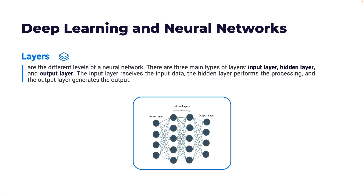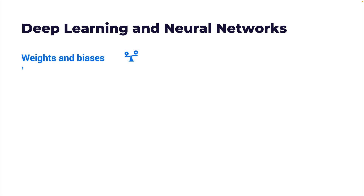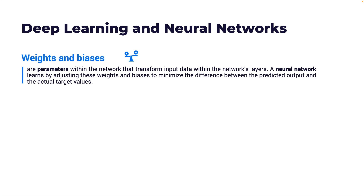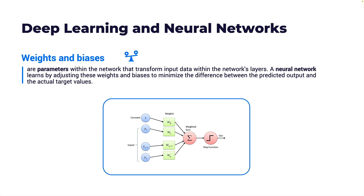Layers are the different levels of a neural network. There are three main types: an input layer, a hidden layer, and an output layer. The input layer receives the input data, the hidden layer performs the processing, and the output layer generates the final output. Weights and biases are parameters within the network that transform input data within the network's layers. A neural network learns by adjusting these weights and biases to minimize the difference between the predicted output and the actual target value. This process of adjusting parameters like the number of neurons, layers, and activation functions is called hyperparameter tuning.